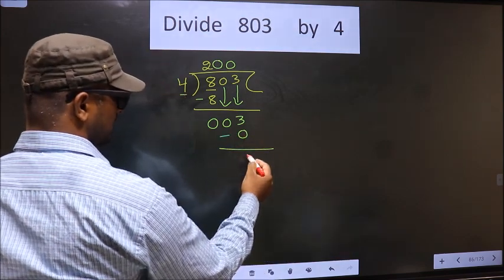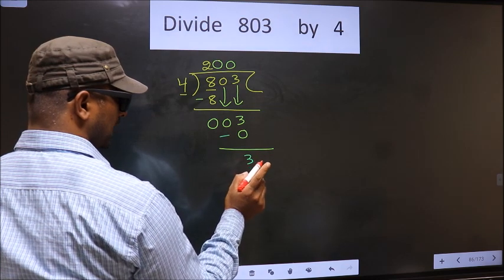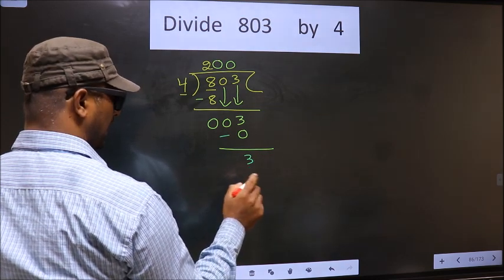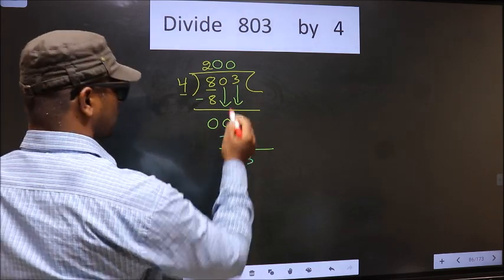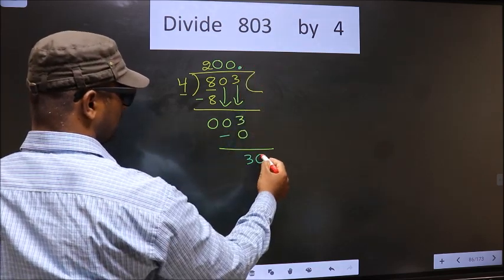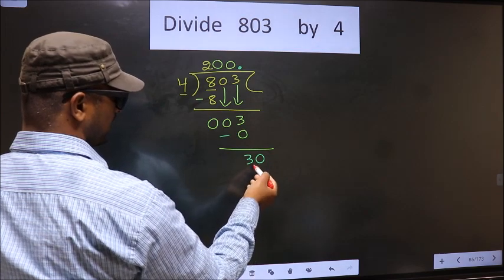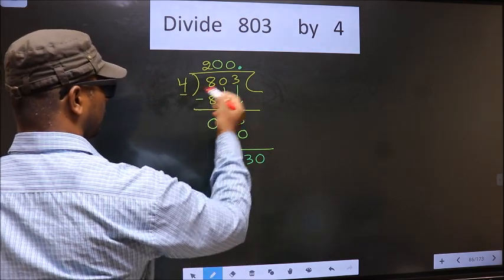Here we did not bring any number down, and 3 is smaller than 4, so we can put a decimal and take 0 here. So 30. A number close to 30 in the 4 table is 4 times 7 is 28. Now you subtract, you get 2.